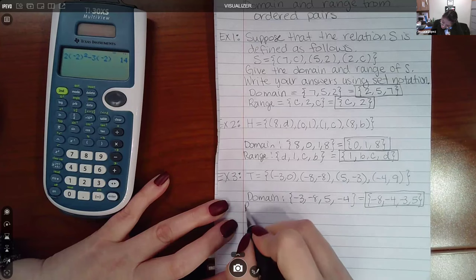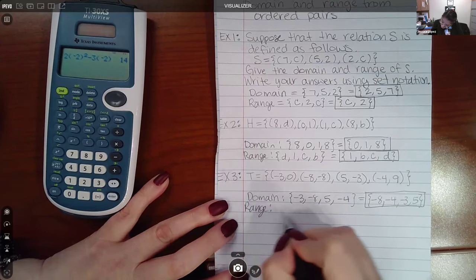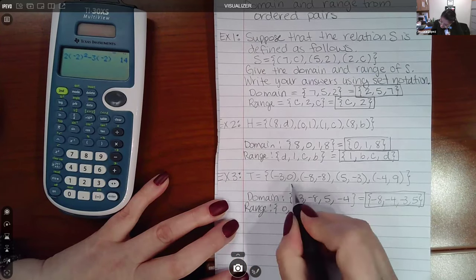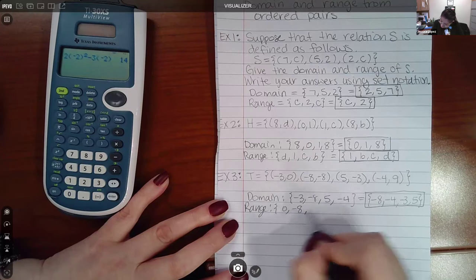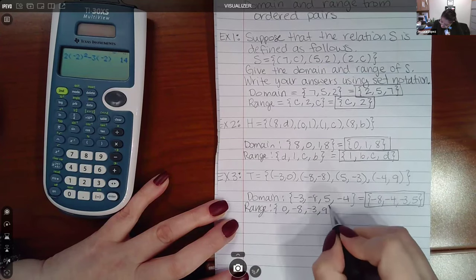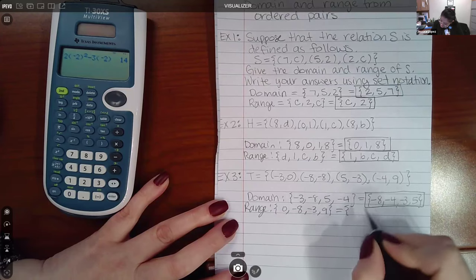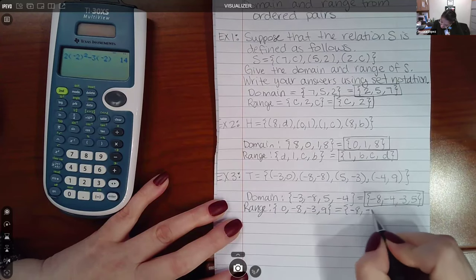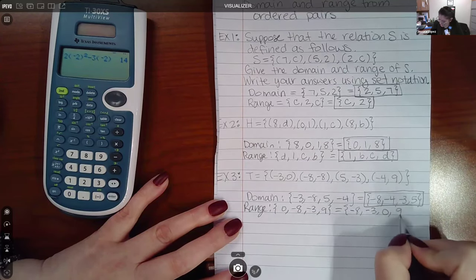Then for the range, that's going to be zero, the second coordinates, negative eight, negative three, and nine. And again, least to greatest would be negative eight, negative three, zero, and nine.